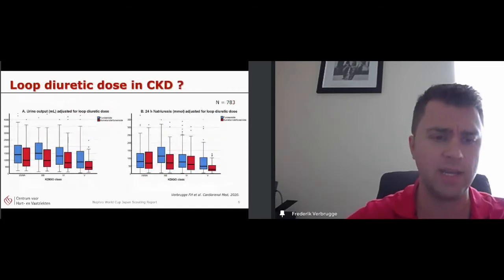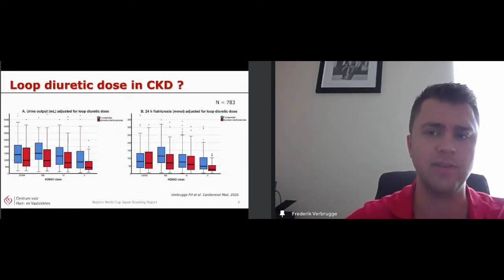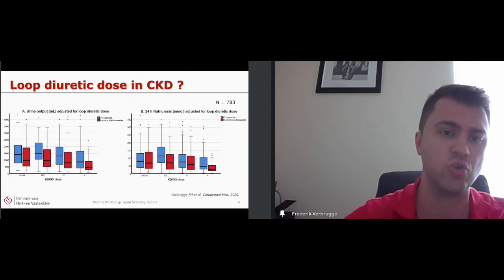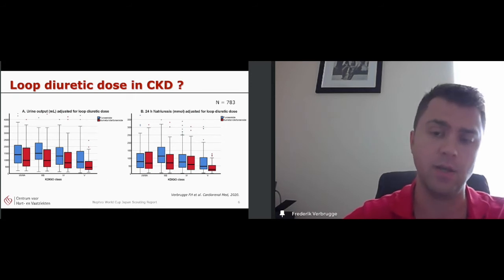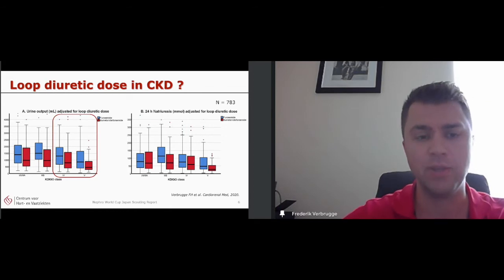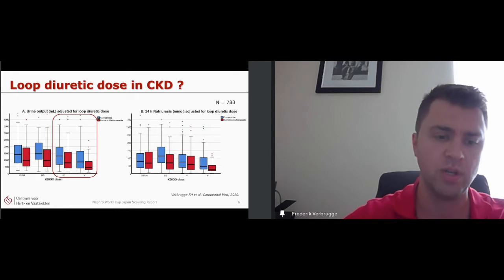This is a study that we did showing that the response to loop diuretics is really dependent on the GFR as well. So on the left, it's urine output, on the right, it's natriuresis, which is probably an even more clean marker of diuretic response. And as you can see, furosemide is in blue. Bumetanide and torasemide, who have better oral absorption, is in red. You can see that there is a linear decrease, especially in the advanced CKD stage four and five. And this is even more pronounced with natriuresis.